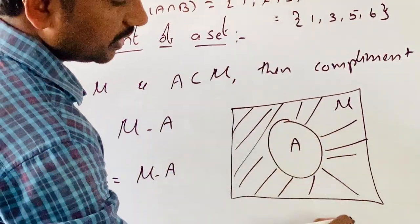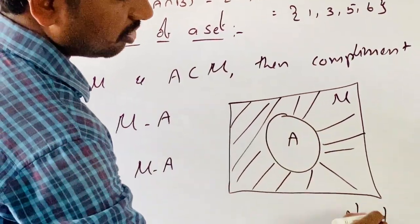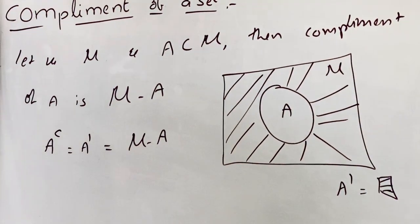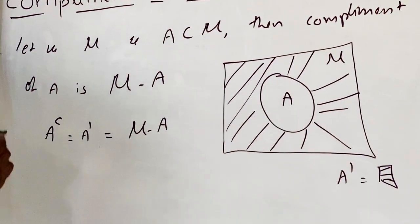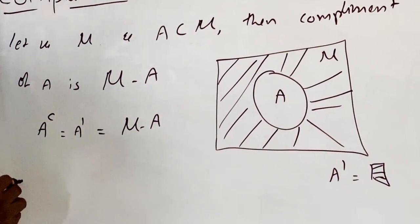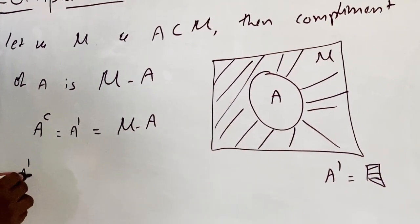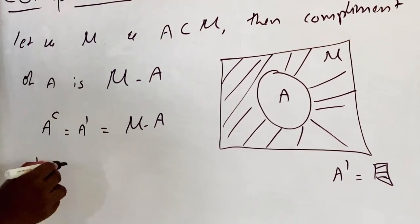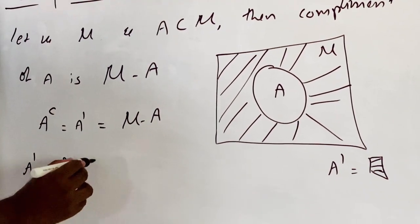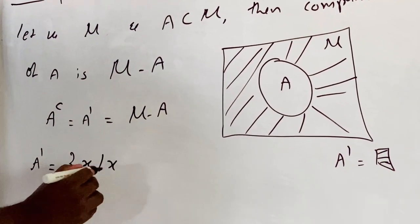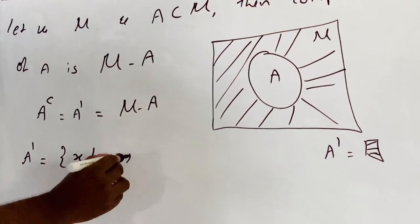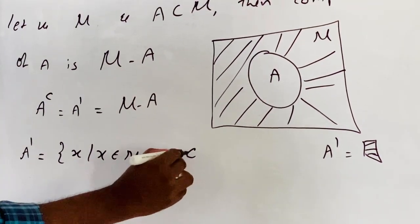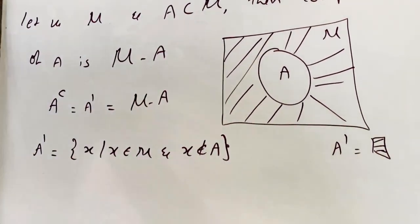The set builder form of the complement of A, or A dash, is equal to the set of X such that X belongs to mu and X does not belong to A.